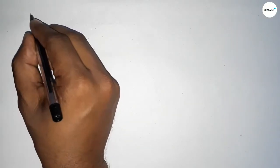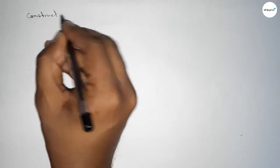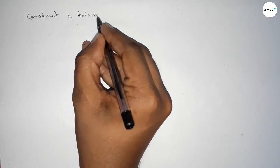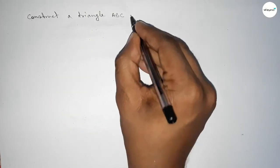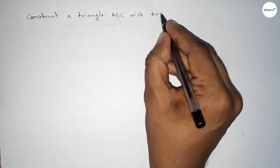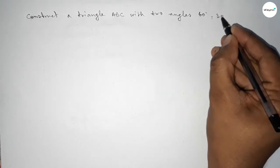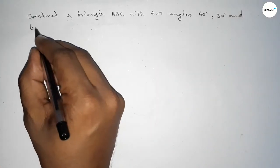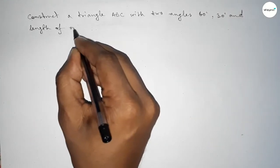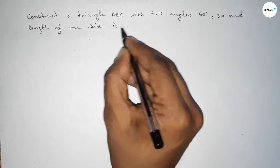Hi everyone, welcome to SI Share Classes. Today in this video we have to construct a triangle ABC with given two angles, 60 degrees and 30 degrees, and given length of one side of the triangle is 5 centimeters.